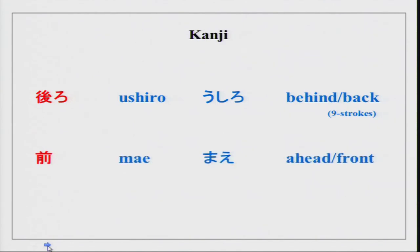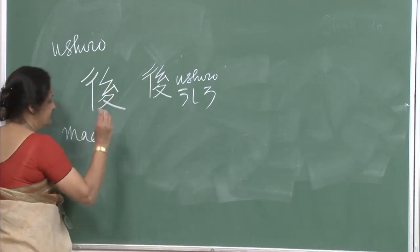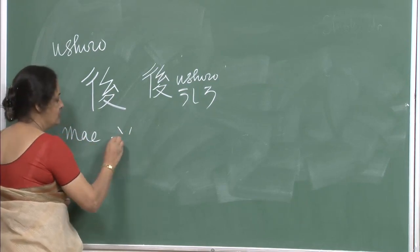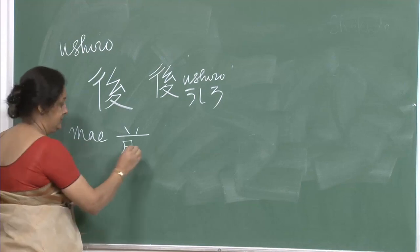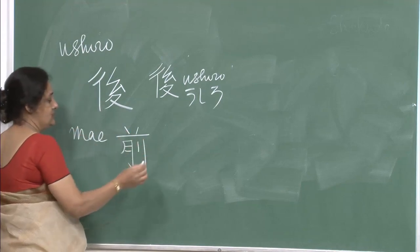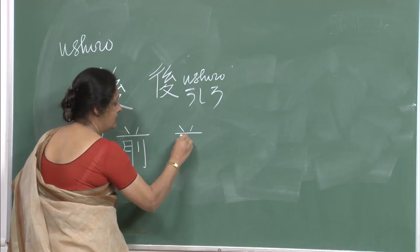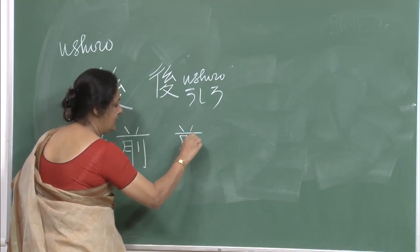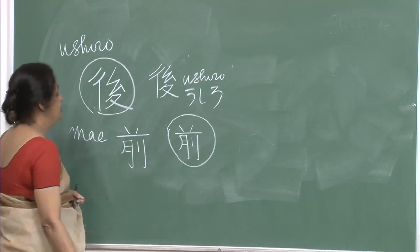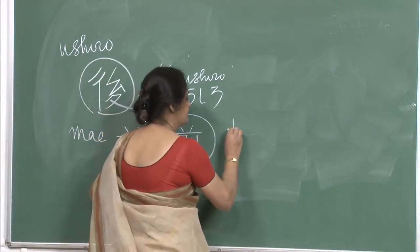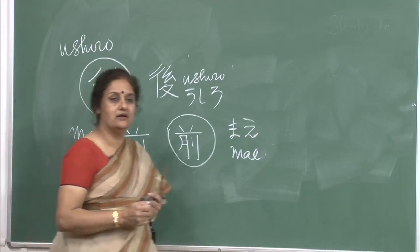We have another kanji for you — mae. One, two, three — this character you have done if you remember 'month.' Let us see how many strokes: one, two, three, four, five, six, seven, eight and nine — again a nine-stroke character like ushiro. Mae means front, ahead, or before.